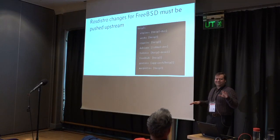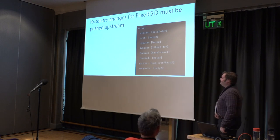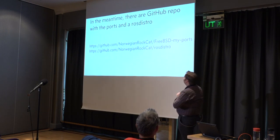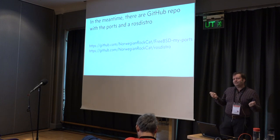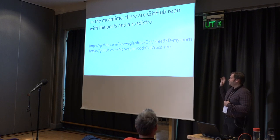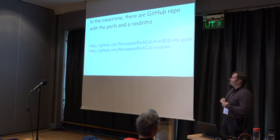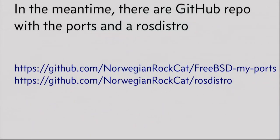It's a bit of a chicken-and-egg problem: you have to put the entries in the distro files so there's a reason to put them into the ports tree. In the meantime I've created two GitHub repositories: a FreeBSD myports repo that includes a ROS section set up to use the Portshaker tool so you can mix it in with your other ports, and a copy of the ROS distro files updated as of earlier this week. With those you're basically ready to go.